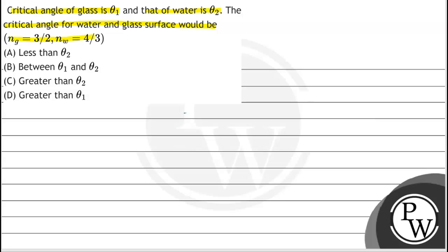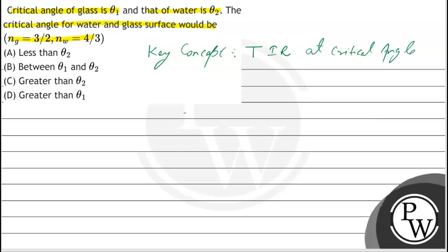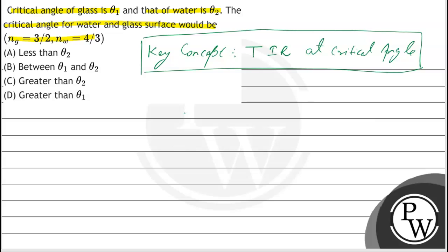This question is about the glass and water interface — we need to find the critical angle. The key concept here is Total Internal Reflection at the critical angle. The minimum angle of incidence at which total internal reflection occurs is known as the critical angle.